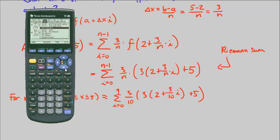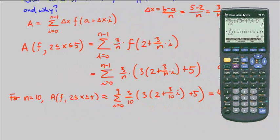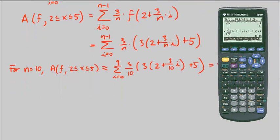We go ahead and f3 to sum. Then we have the expression is 3/10 times, and I have in parentheses 3, I'm just copying it here, times in parentheses I have 2 plus 3/10 times i, alpha 9 gives me i, close the parentheses, plus 5, close the parentheses, comma, my variable is i, comma i, and my starting index is 0, my stopping is 9, close that, and diamond enter. It's going to help me approximate it, and that's 45.15 units squared. Units squared is because we have area.